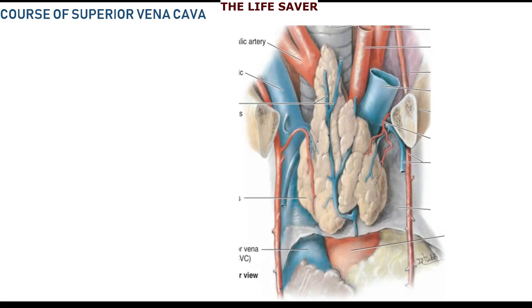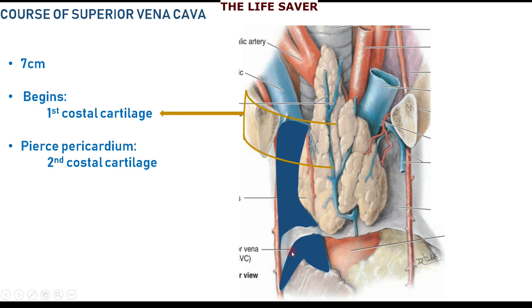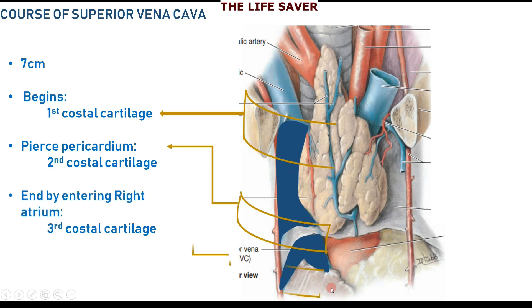Now we are going to discuss the course of the Superior Vena Cava. It is 7 cm long. It begins at the level of the first costal cartilage, pierces the fibrous pericardium at the level of the second costal cartilage, and then drains its blood into the right atrium of the heart at the level of the third costal cartilage.